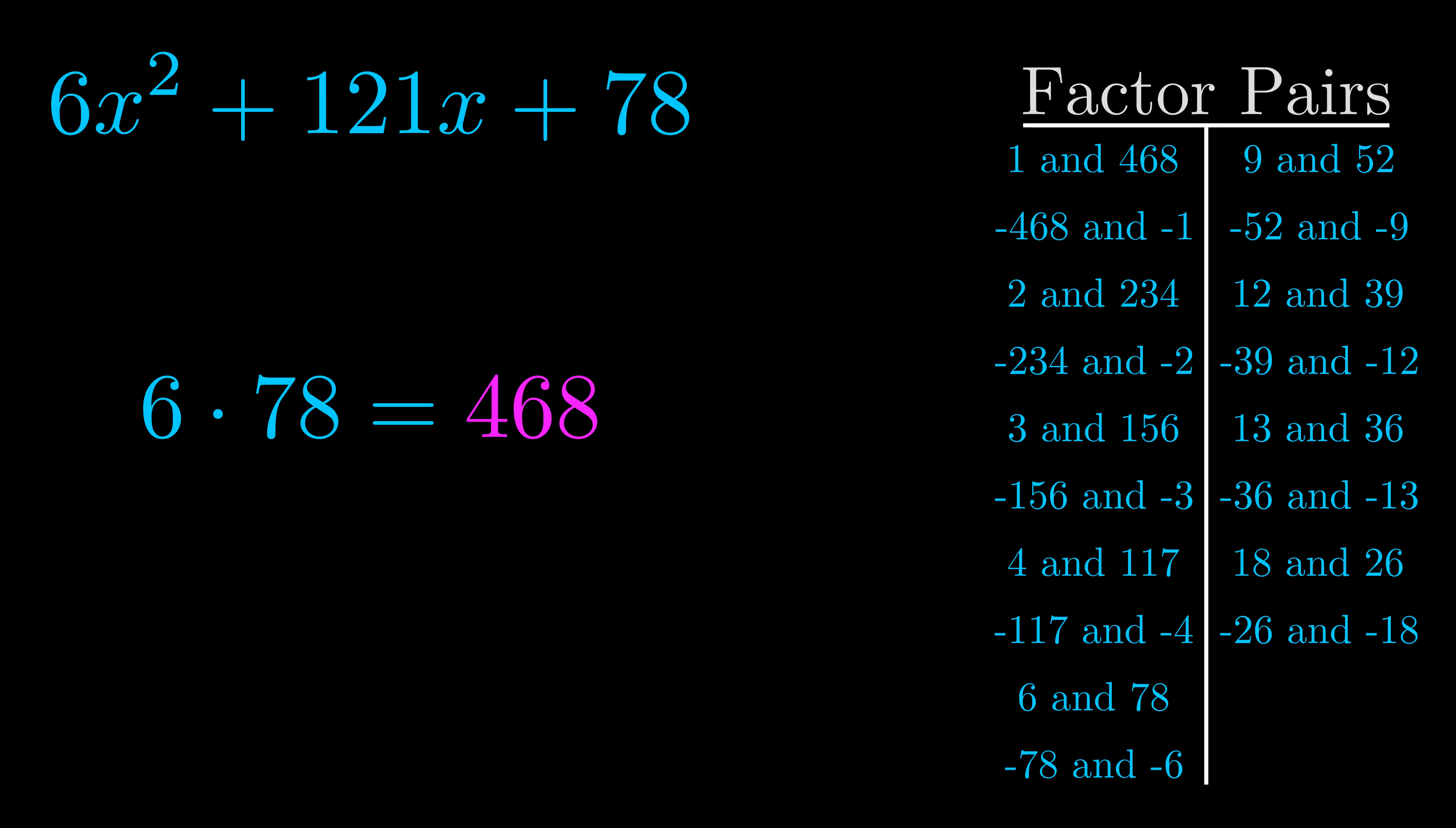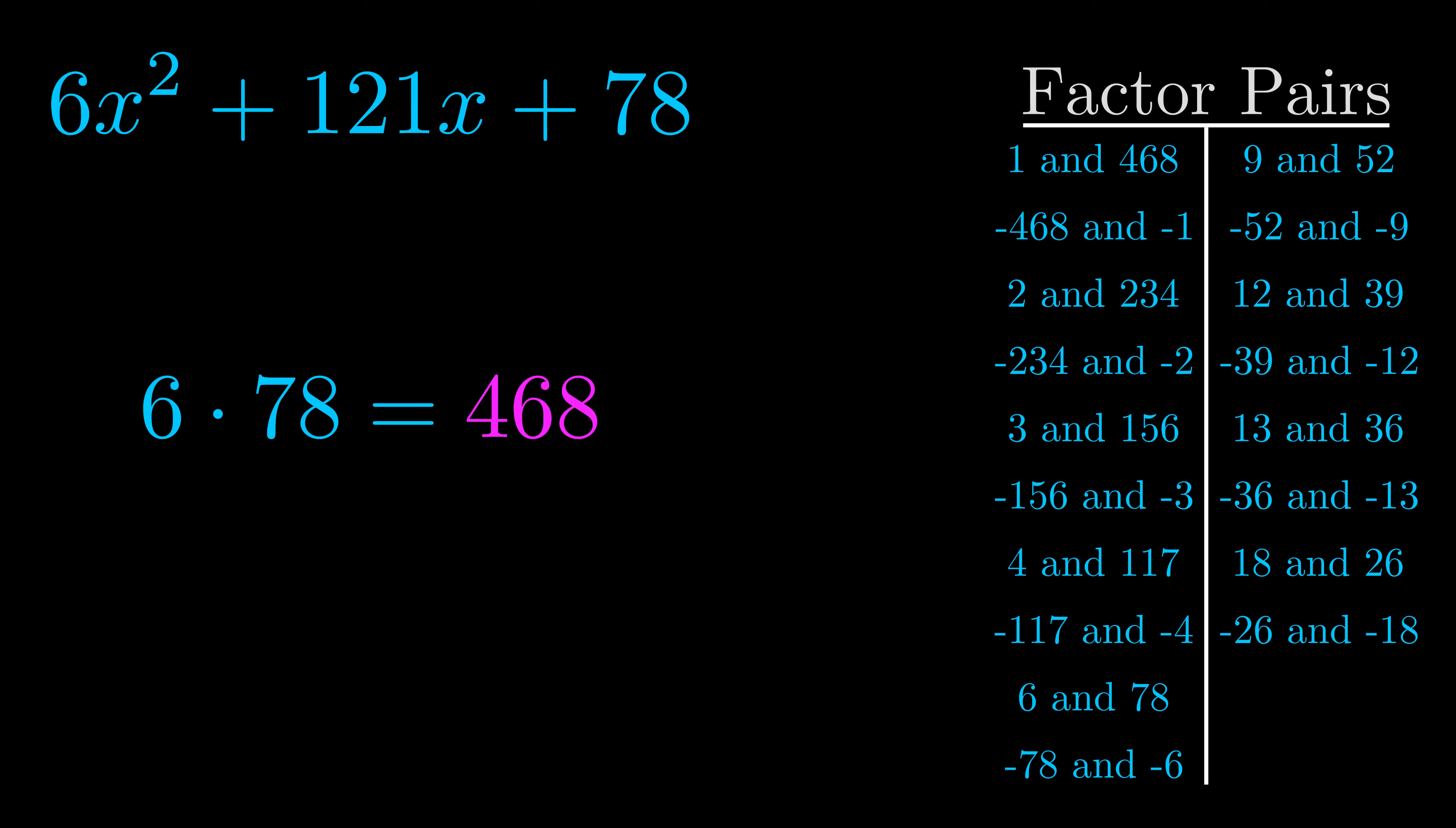Now once you have these factor pairs, the goal is to find which of these pairs adds to the b value. The b value is the coefficient on the x term. That's the middle term, the one that we haven't done anything with yet. And really this is the only factor pair that we need.